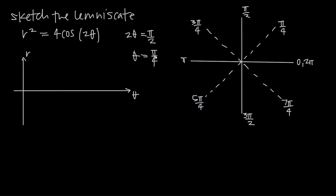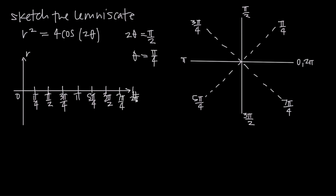This value tells us to mark off our theta axis in increments of pi over 4. So we start at 0, then pi over 4, 2 pi over 4 (which is pi over 2), 3 pi over 4, pi, 5 pi over 4, 6 pi over 4 (which is 3 pi over 2), 7 pi over 4, and finally 8 pi over 4, which is 2 pi.